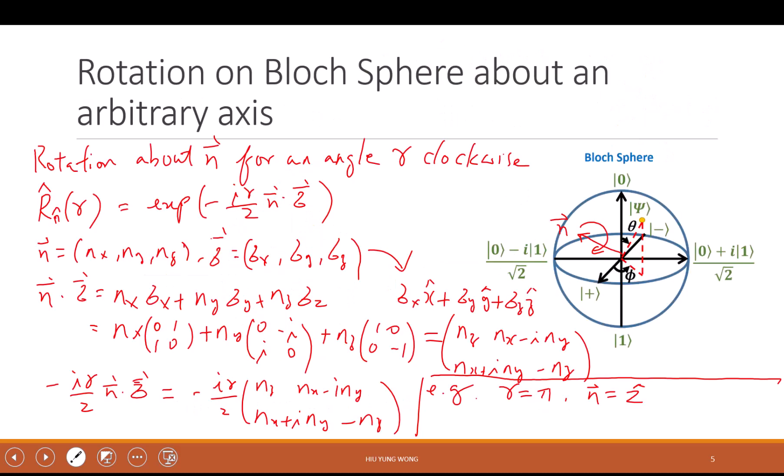The rotation on the Bloch sphere about any axis can be found using this equation. This is given in Sakurai's quantum mechanics book in our syllabus. It has a chapter about angular momentum with this equation derived, but otherwise just take it for granted.